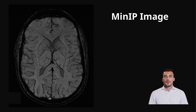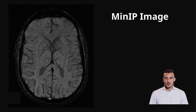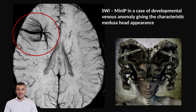Finally, we have the minIP image, or minimum intensity projection. Now that we have our SWI images, we don't just look at one slice — we take a few thin slices and stack them together. The software then keeps only the darkest parts from each slice, because in SWI, darkness means susceptibility, like veins or microbleeds. This creates sections where all those dark structures line up, almost like a 3D roadmap of veins running through the brain. Here is an axial SWI minimum intensity projection in a case of developmental venous anomaly, beautifully illustrating the feeding and draining vessels giving the characteristic Medusa head appearance.